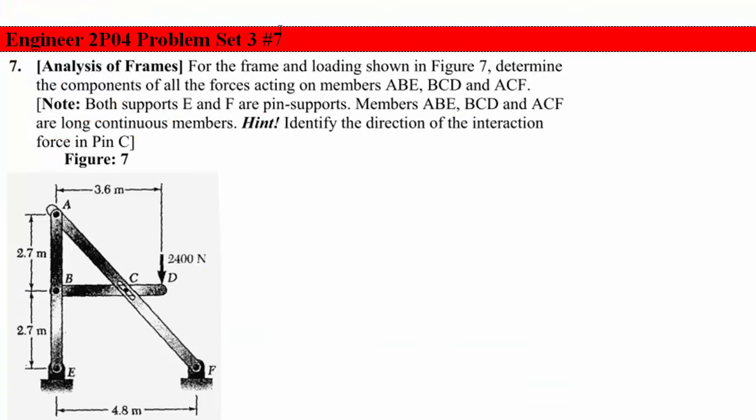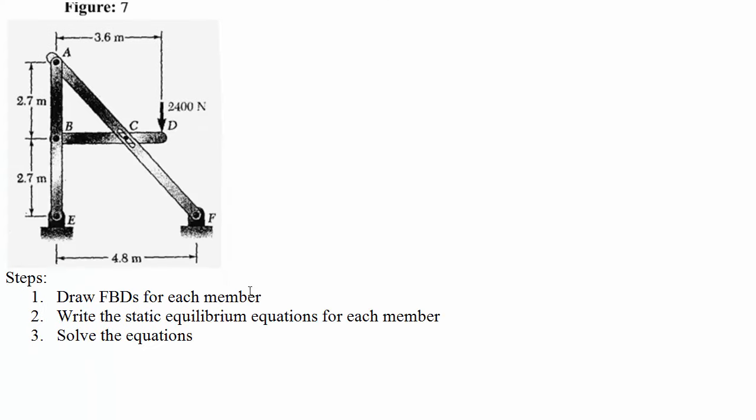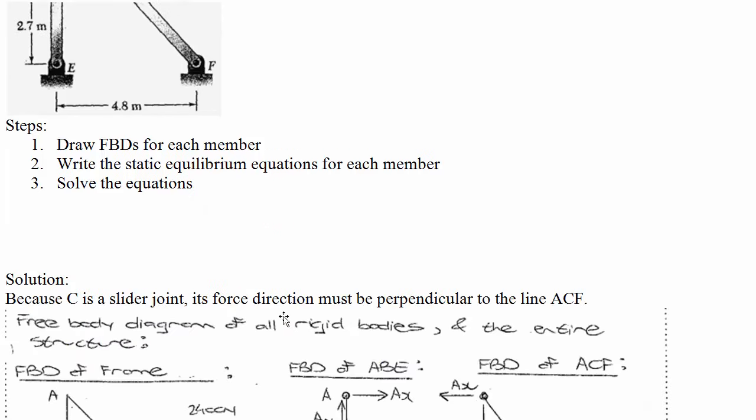Next practice problem. This is number seven from the problem set number three, again in Engineer 2PO4. This is a frame and we've got this interesting support here. So the only new thing in this problem is figuring out the force direction at pin C. So this is a slider joint. If you look at it, the member is free to slide along the length of ACF. And so if it's in static equilibrium, you can think about which way the force at pin C has to be. So again, you want to draw FBDs for each member and then write the static equilibrium equations for each member and then solve the equations.